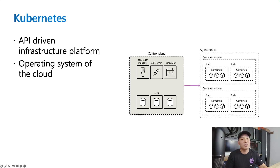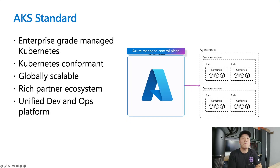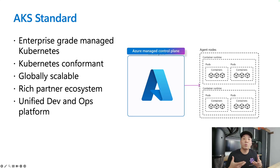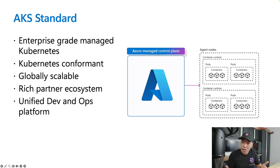That brings us to AKS, or AKS Standard as we'll call it. AKS is a managed Kubernetes offering in the Azure cloud. The AKS team takes care of all of the control plane components, and all you need to worry about is operating your workloads within worker node pools. It's a great way to get started with Kubernetes without having to worry about the operational overhead of managing a control plane.